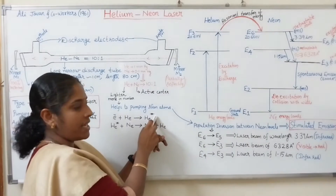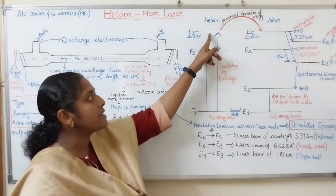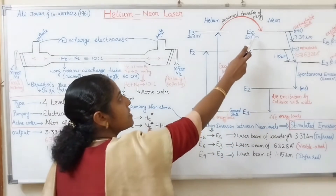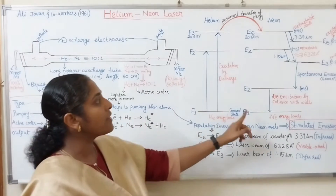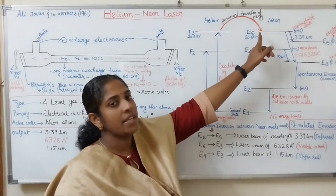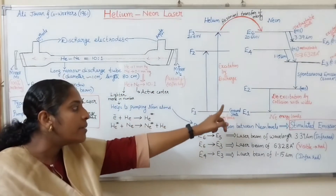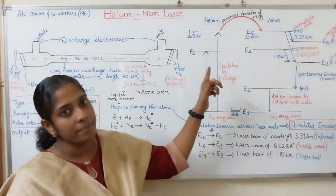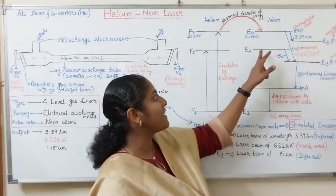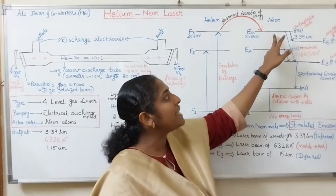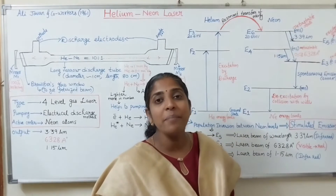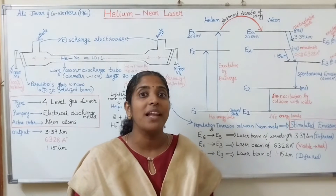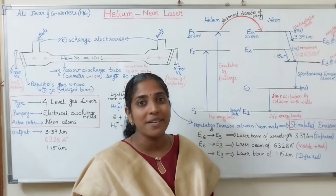The excited helium atoms (indicated by star for excited state) collide with the ground-level neon atoms, thereby exciting the neon atoms to higher energy levels E4 and E6. Simultaneously, these helium atoms return to the ground level and are again ready for the pumping scheme. E4 and E6 are metastable states, where atoms can retain for a long lifetime of the order of 10⁻⁶ to 10⁻³ seconds.